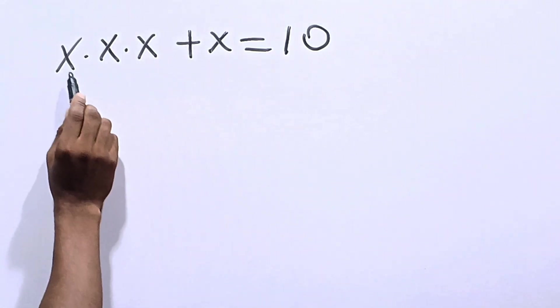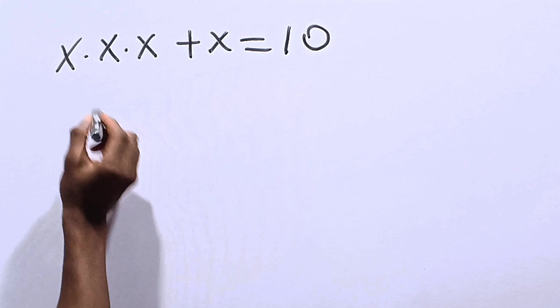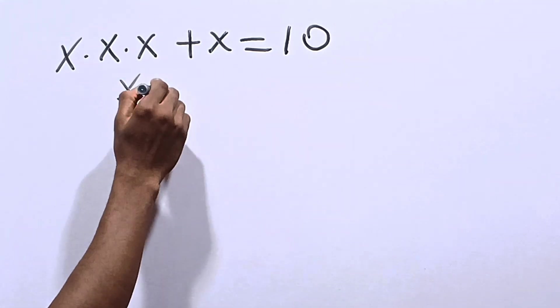Let's solve this together. It says x dot x dot x plus x is equal to 10. We need to solve for the values of x.